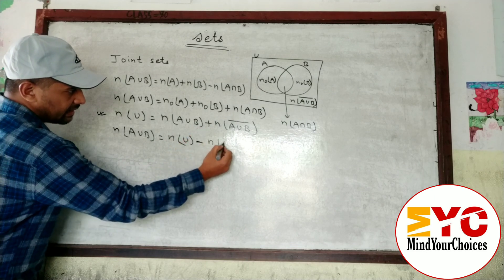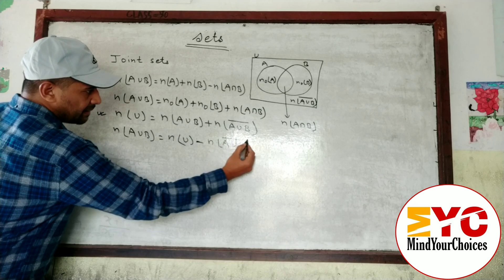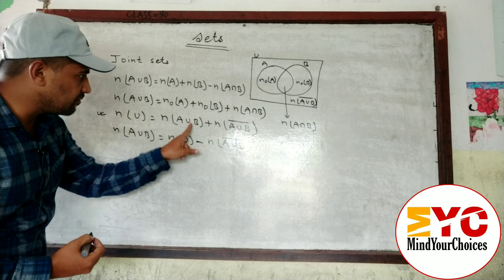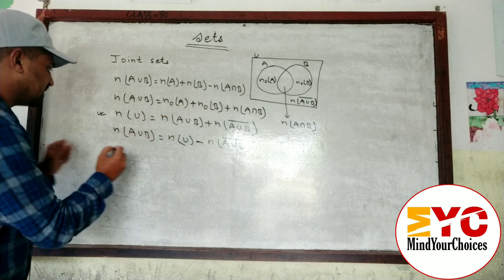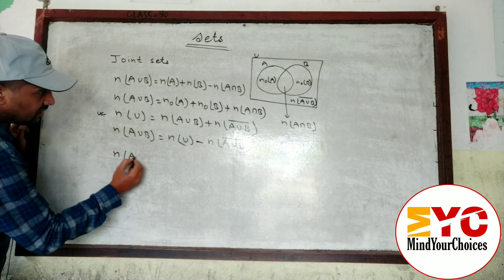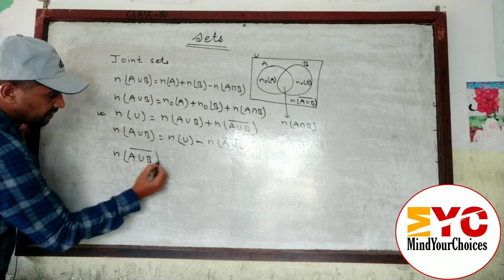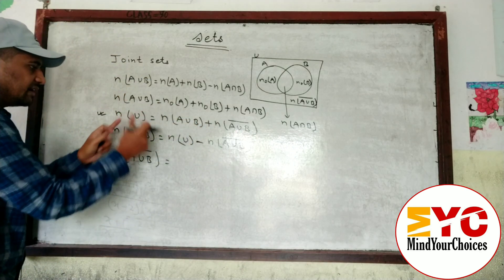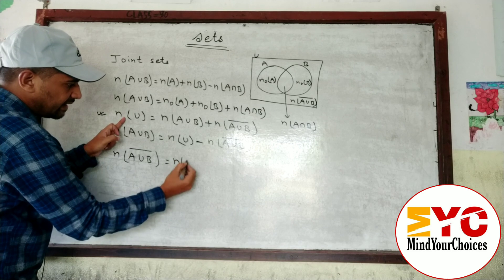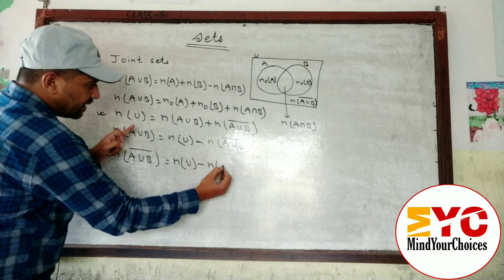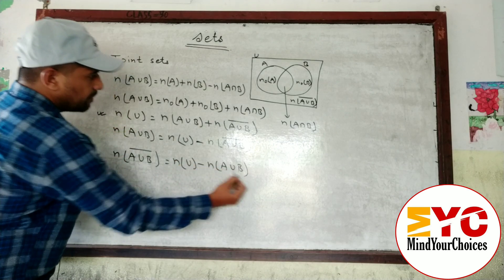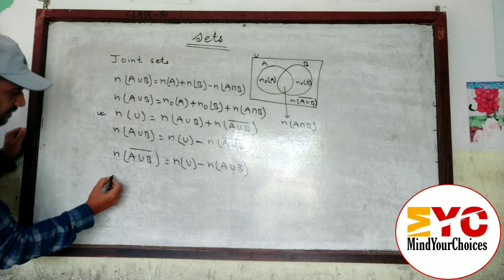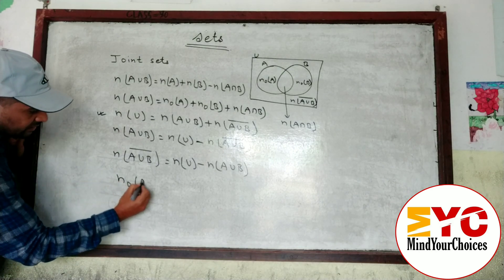To find n(A∪B), take n(A∪B)' to the right side: n(A∪B) equals n(U) minus n(A∪B)'. Similarly, to find n(A∪B)', take n(A∪B) to the other side: n(A∪B)' equals n(U) minus n(A∪B).